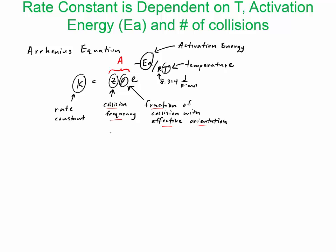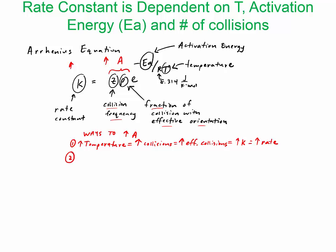There are a couple of ways you can increase A, the frequency of collisions. One is if you increase the temperature, you increase the effective collisions, which — as you can see — increases the rate constant K, which increases the overall rate.